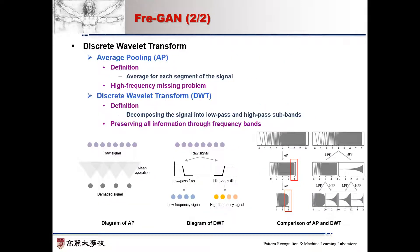Previous studies have used average pooling for the down-sampling method. However, it ignores the sampling theorem and high-frequency contents become invalid. To address this issue, we use discrete wavelet transform, DWT. It decomposes the audio signal into low-pass and high-pass signals. Since all the FrGAN subbands are concatenated after each level of DWT, FrGAN can avoid information loss, especially in high frequencies.